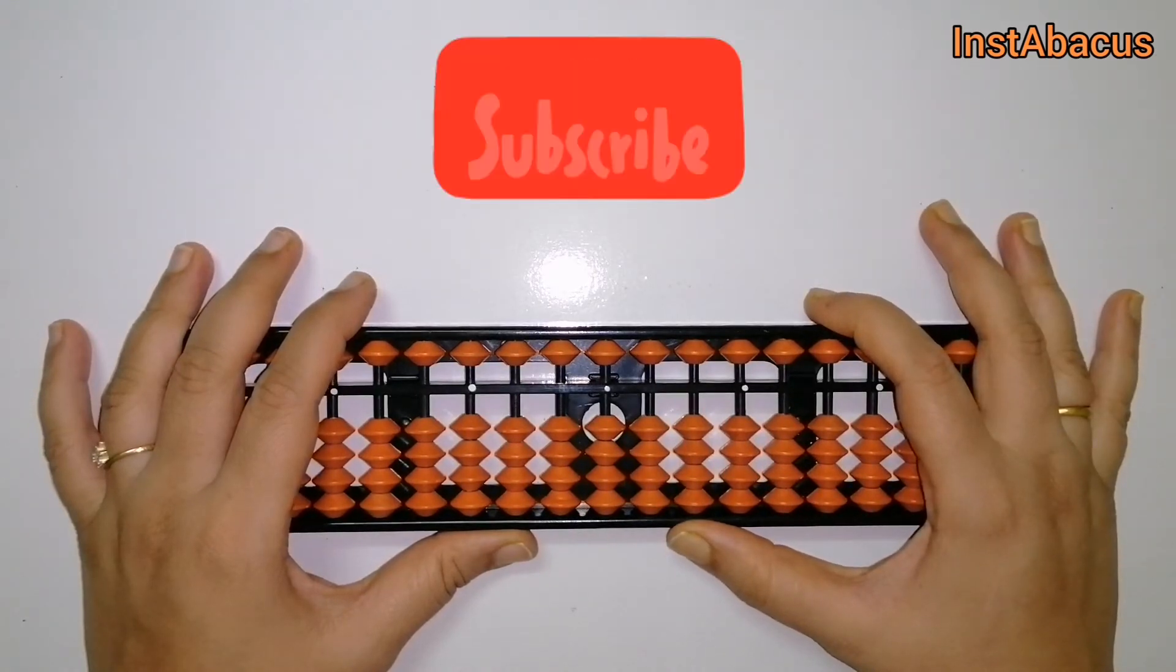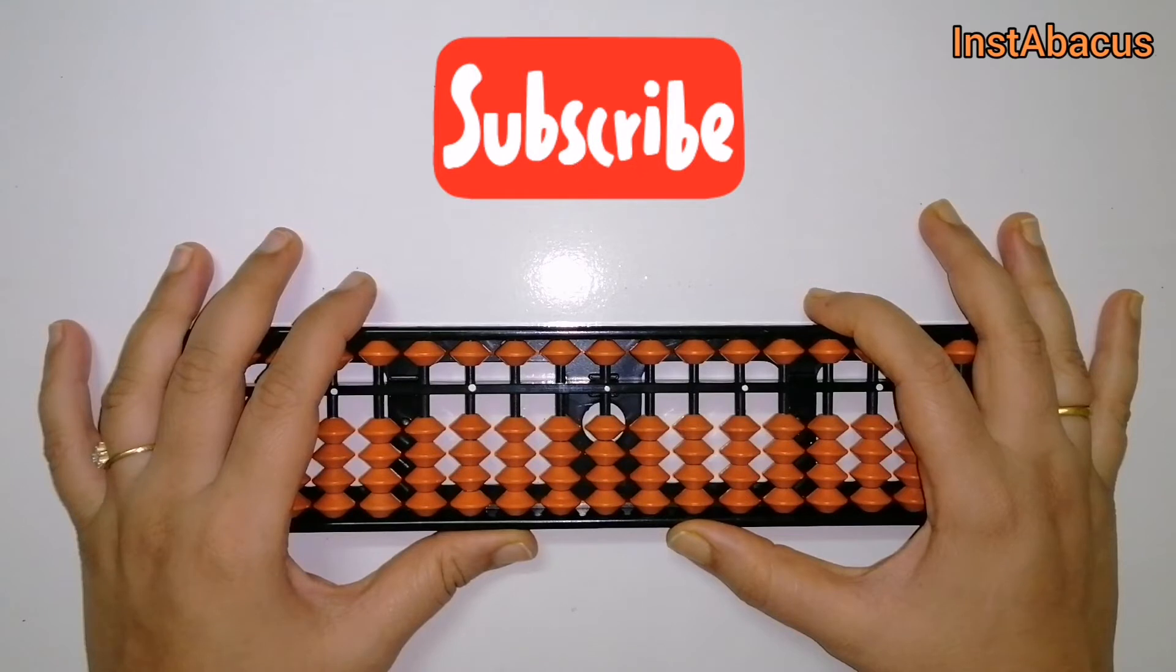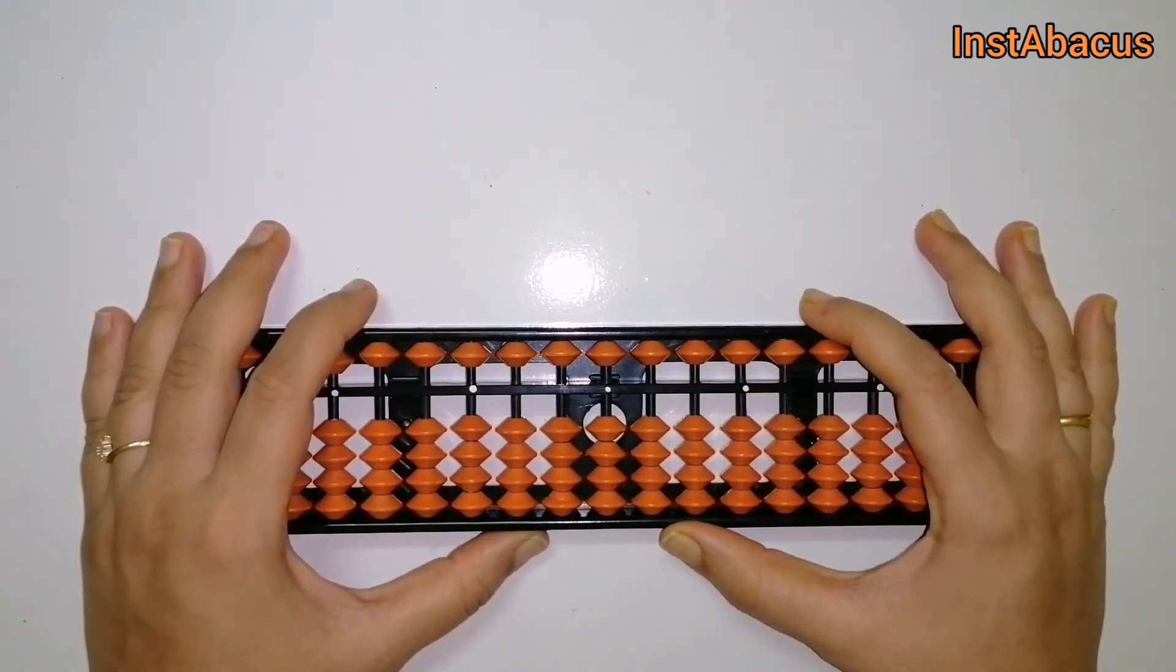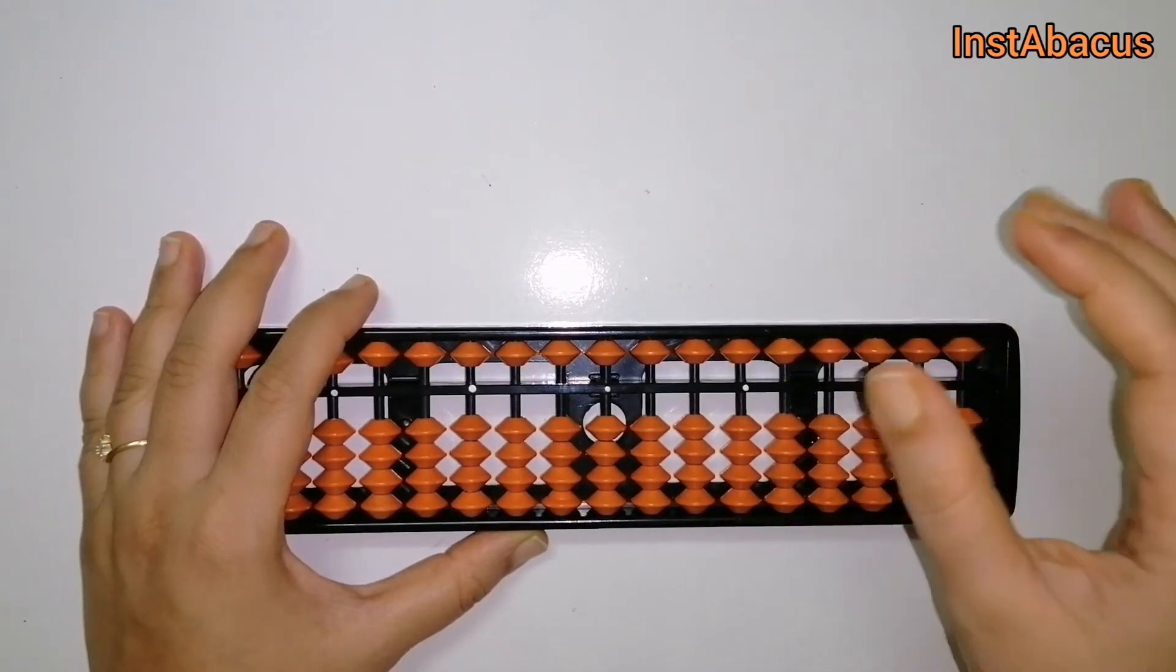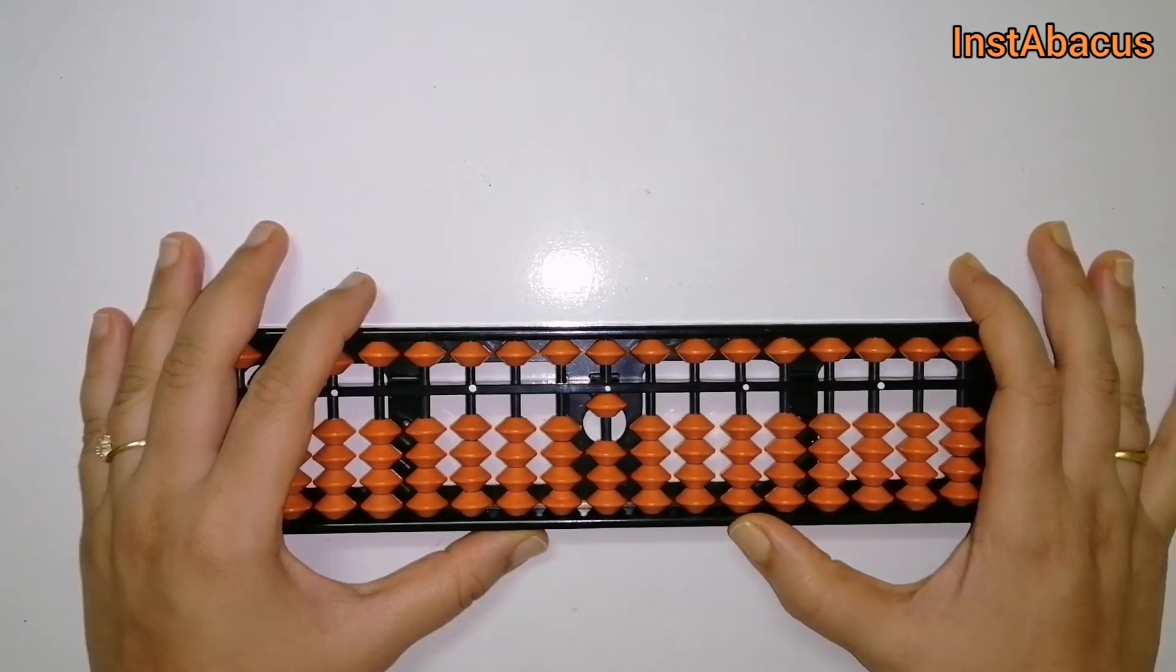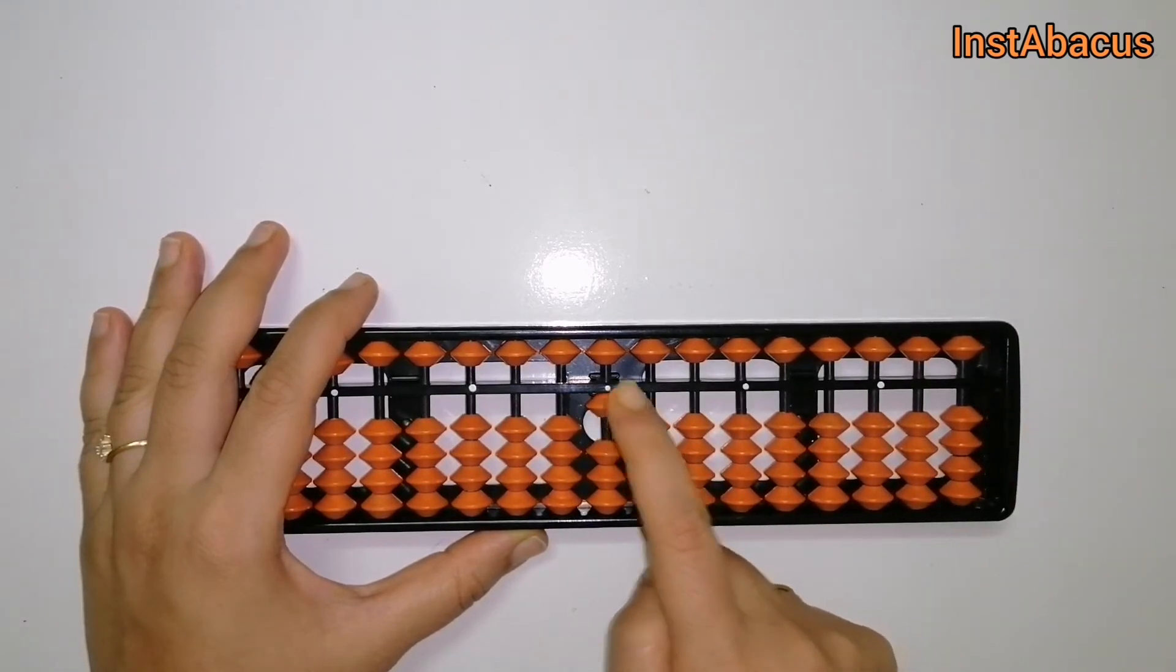Okay, let's quickly get back to the video now. So this is one on our abacus, right? One earthly bead is in contact with the answering bar.